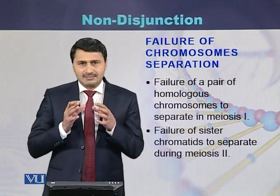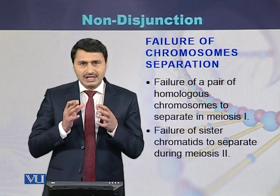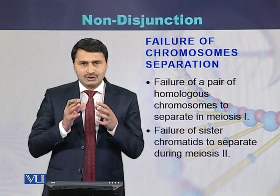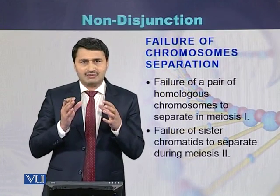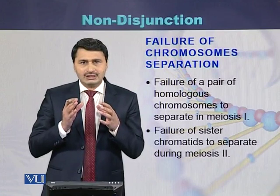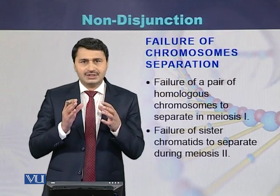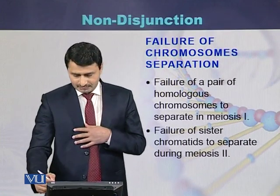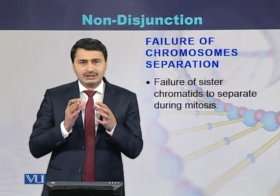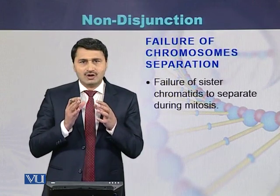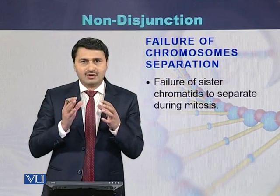Failure of chromosome separation can be of three types. This failure can occur during the first meiotic phase, where homologous chromosomes separate from each other. It can occur during meiosis 2, where sister chromatids separate from each other. Failure of sister chromatid separation can also occur during mitosis, where sister chromatids fail to segregate from each other.